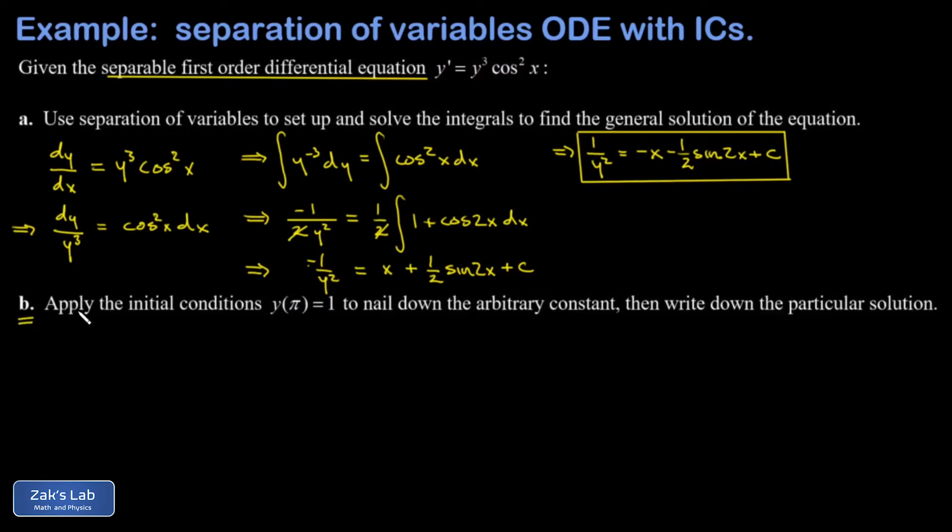My initial condition is y(π) = 1. In other words, when x = π, y = 1. So on the left hand side I replace y with 1 and I just get 1.